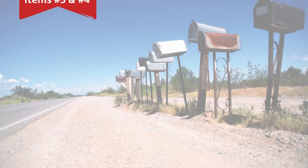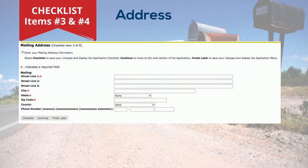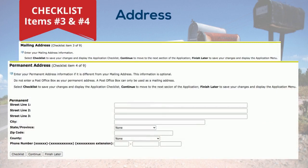For checklist items number three and four, we need your mailing address as shown in the fields below. If your permanent address is different from your mailing address, we would also like to collect that information. Remember that you can save your work and finish later or continue on to the next checklist item.